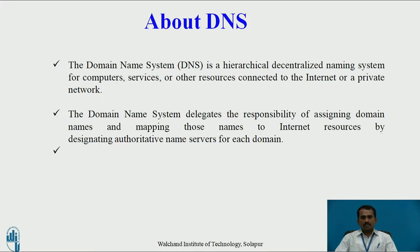About DNS: Domain Name System is a hierarchical, decentralized naming system for computers, services, or other resources connected to the internet or a private network. The Domain Name System delegates the responsibility of assigning domain names and mapping those names to internet resources by designating authoritative name servers for each domain.